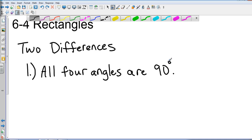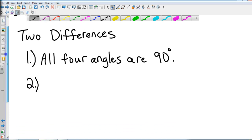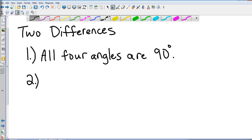All four angles are 90 degrees, and one difference about the diagonals is in a rectangle, the diagonals are congruent.